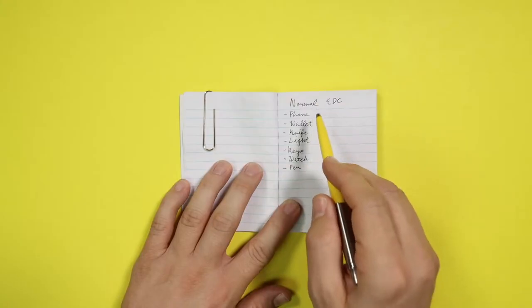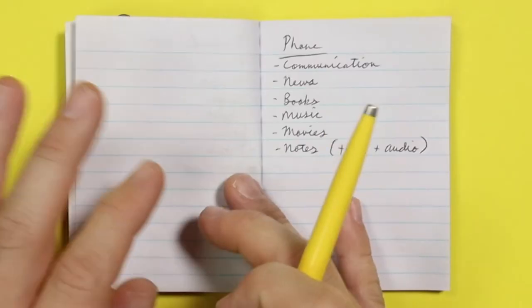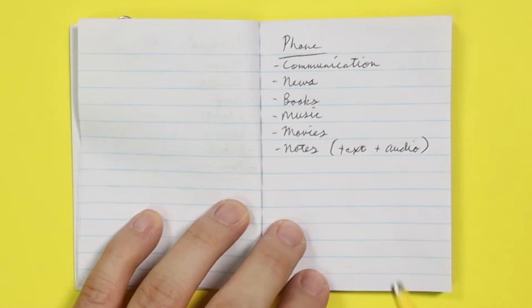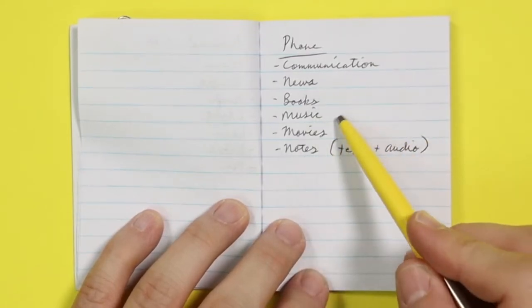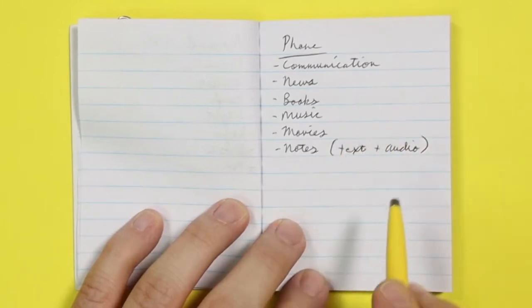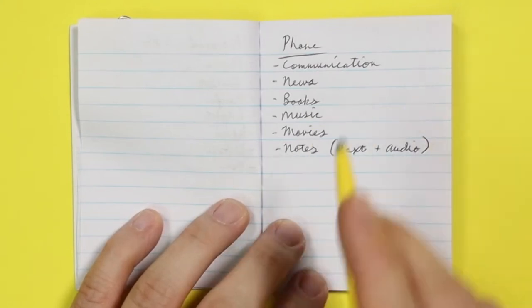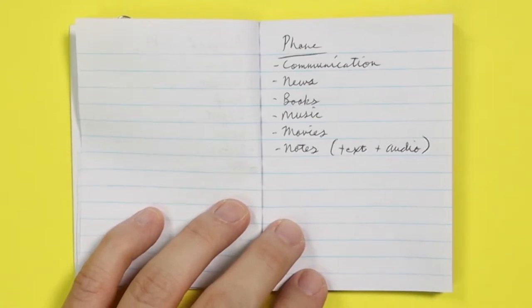We need to first look at the phone because that's going to tell us a lot about what we need to carry. What does a phone accomplish? Communication, news, books, music, movies, and notes, whether it be text or audio. It does all of that and we need to carry stuff to accommodate that and accomplish that. So now let's dive into it.